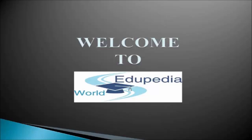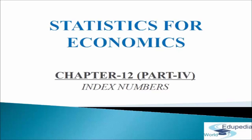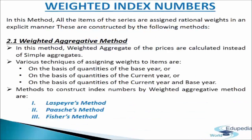Welcome to Edupedia World. In this module we will discuss the construction of weighted index numbers. We have noted that index numbers discussed so far give equal importance to each item. However, while constructing weighted index numbers, rational weights are assigned to all items or commodities in an explicit manner. Such weights indicate the relative importance of items included in the calculation of an index, reflecting their relative importance in the series.